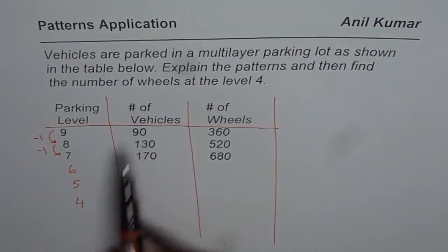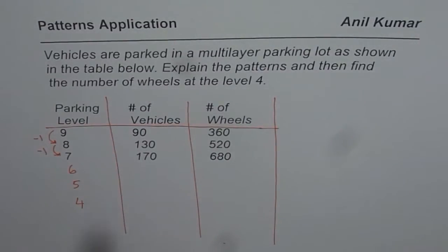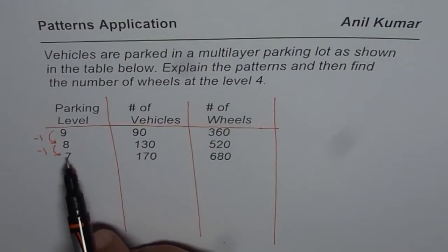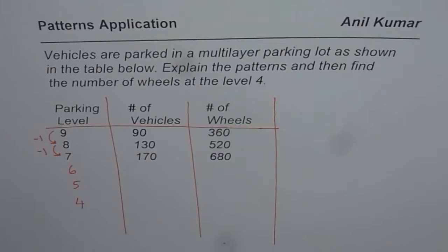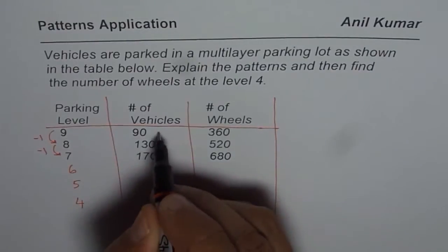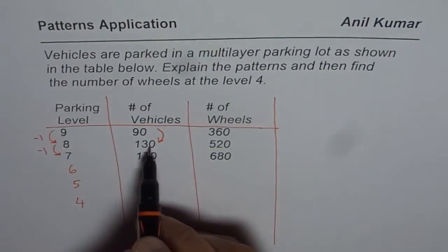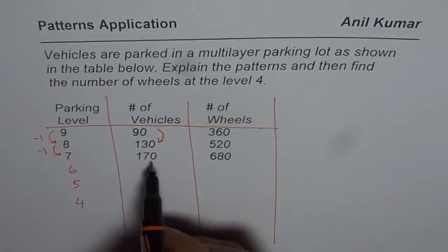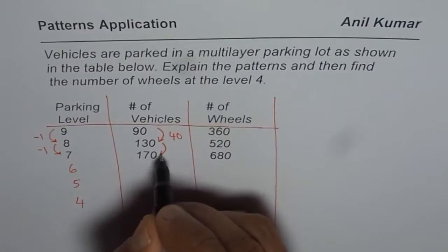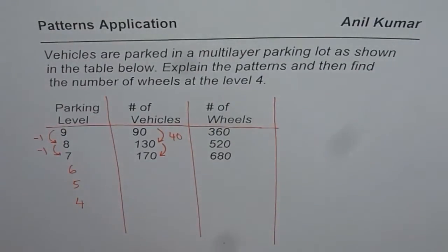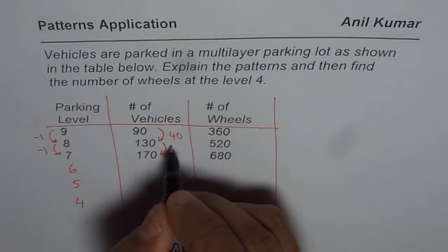Now let's look into number of vehicles. Number of vehicles with every level going down is from 90 to 130, and then from 130 to 170. So it is increasing. It is increasing by how much? You could do 130 take away 90, and that is 40. And how about 170 take away 130? That is also 40.